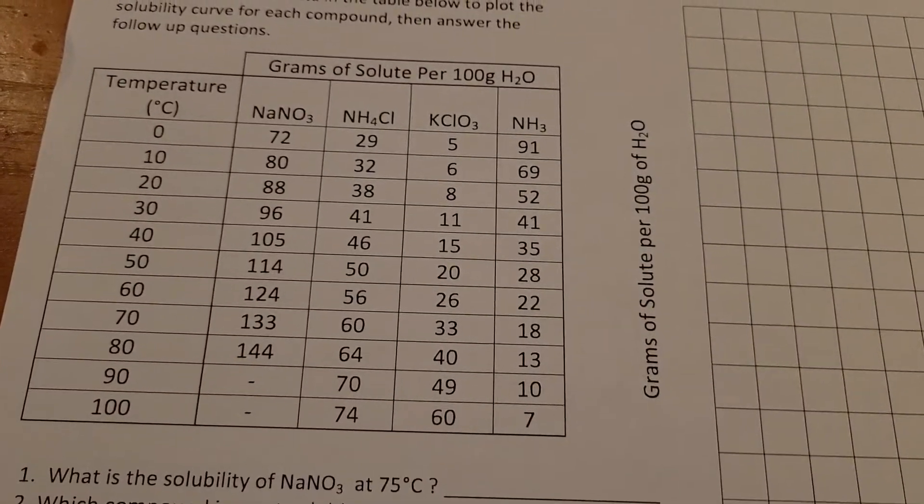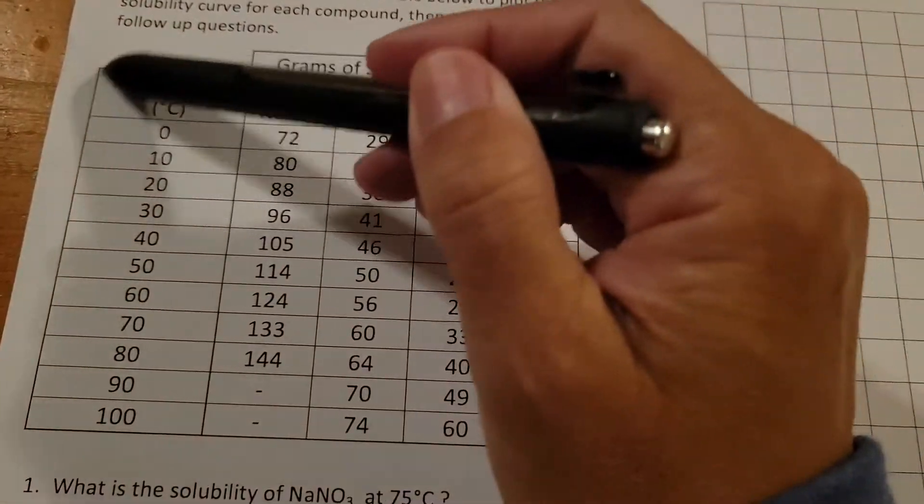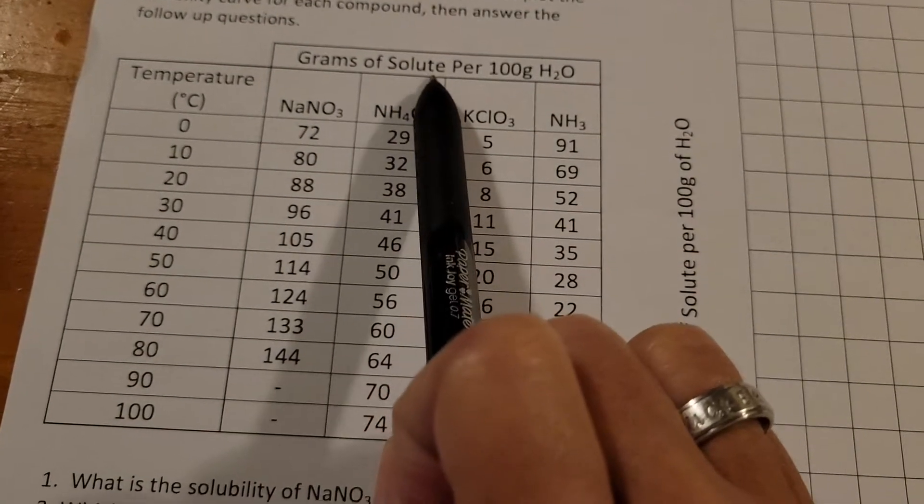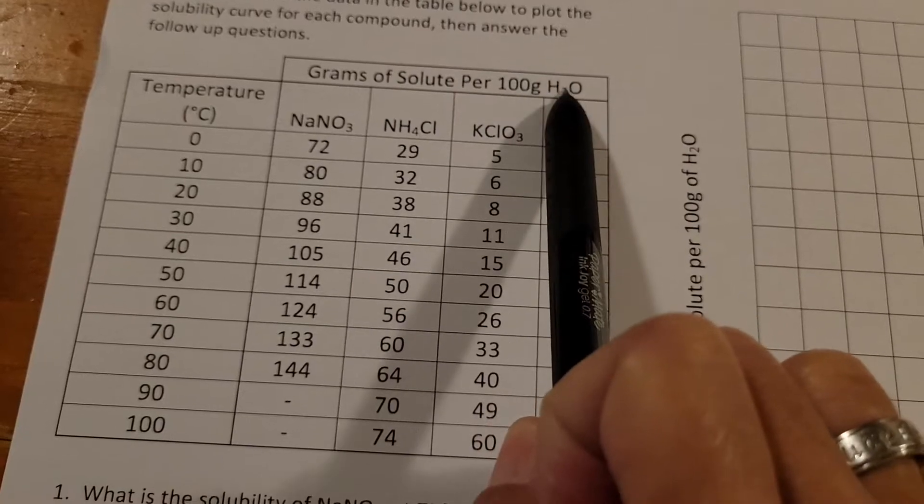First off, you're going to need to have four different colors to create your graph. What this graph is showing us is the temperature from zero to 100 degrees and how many grams of solute will dissolve in that 100 grams of water.